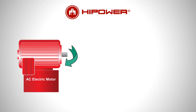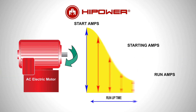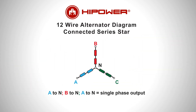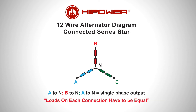In systems where a high percentage of the load is electric motor loads, it is important to consider the increased amperage to start an electric motor in relationship to the lower power to run the motor when it has started. Secondly, on a three-phase system, ensure the loads are equally balanced on each phase.